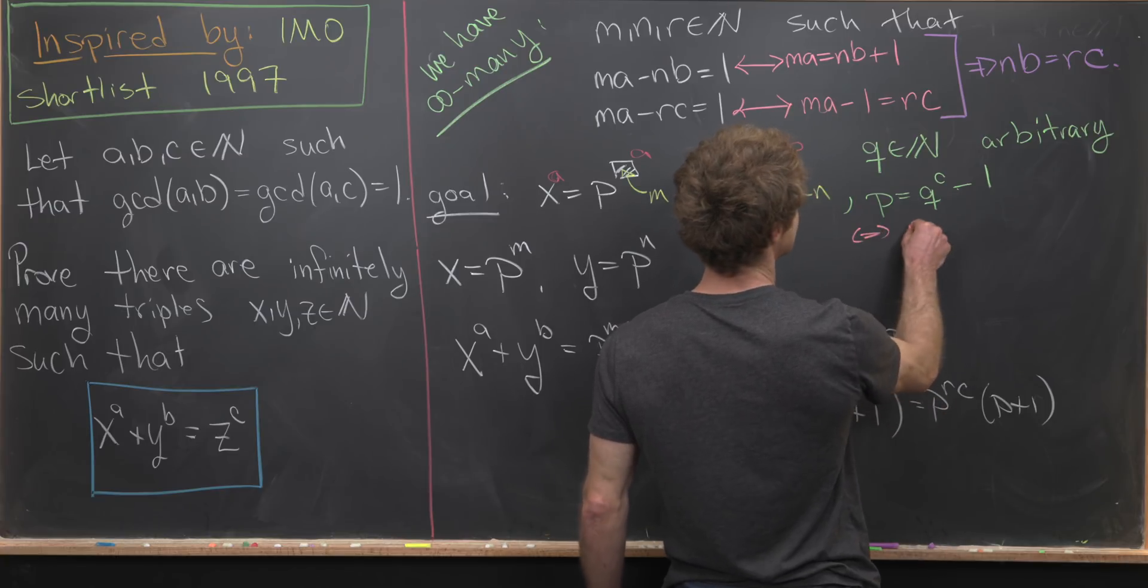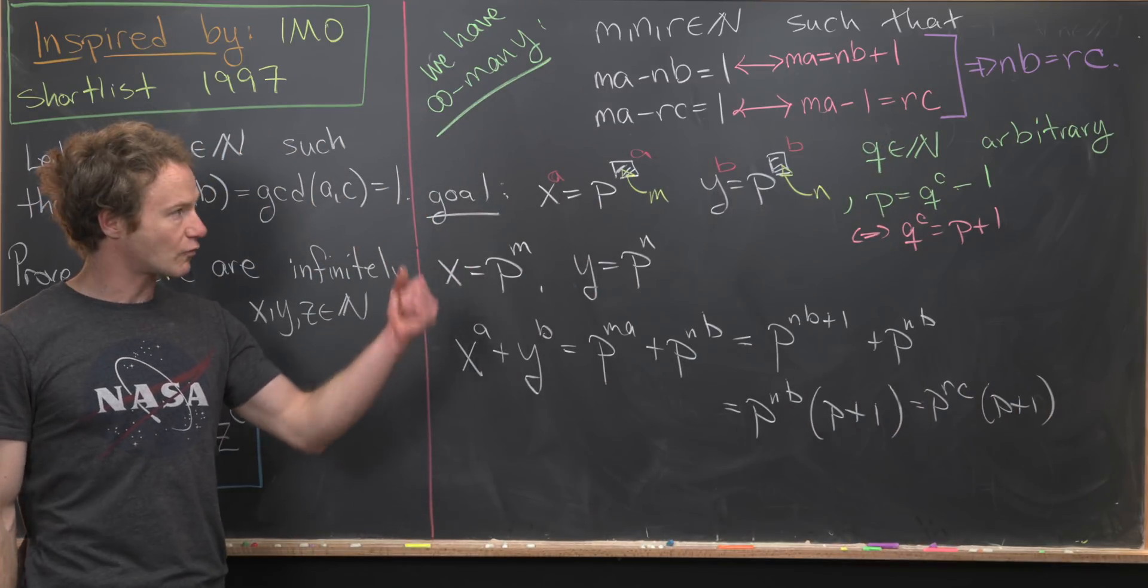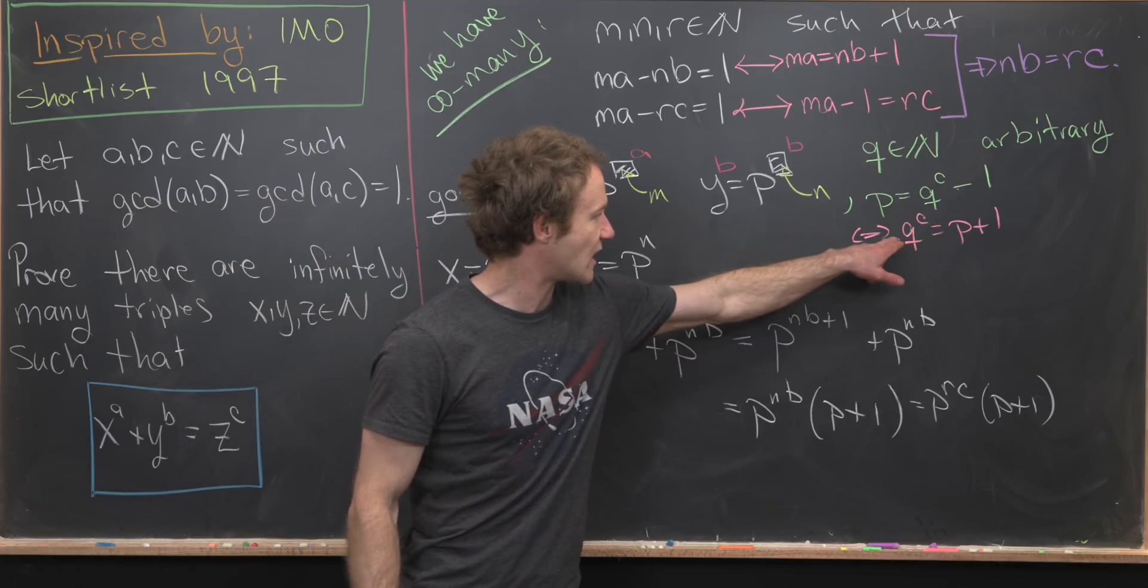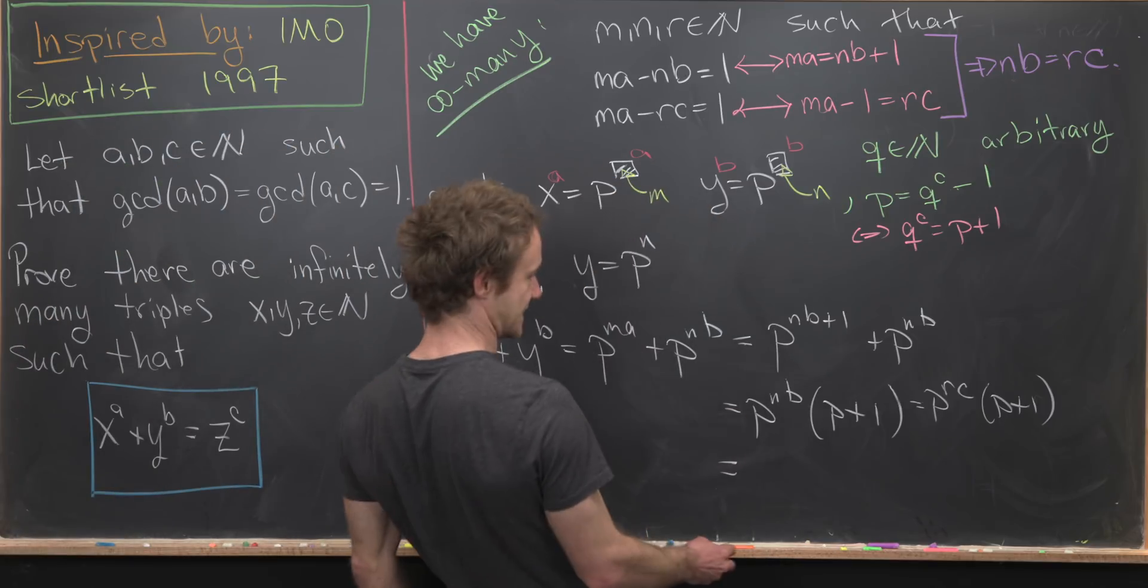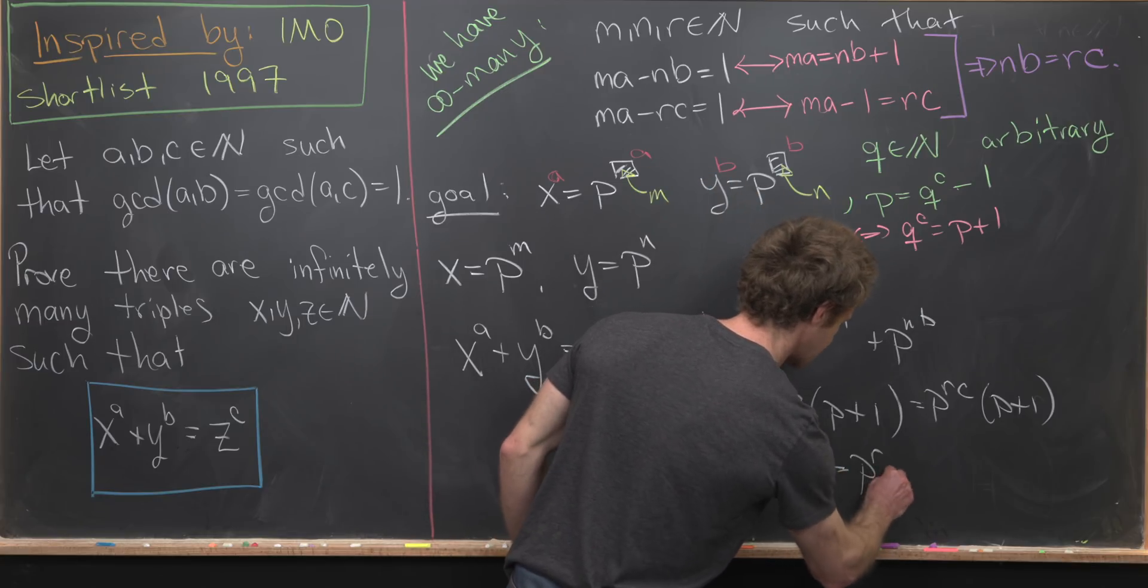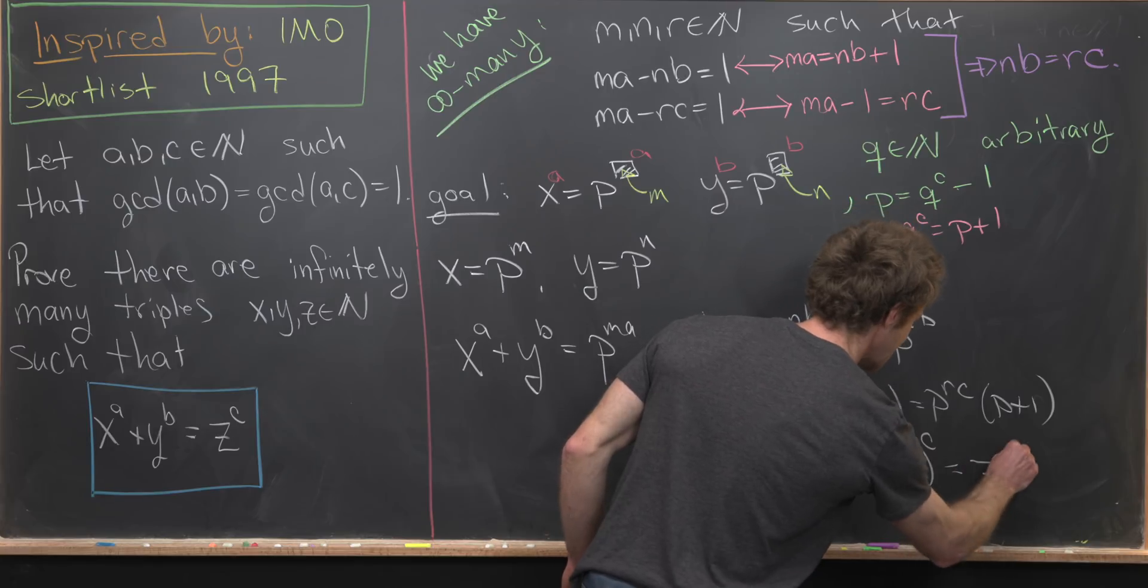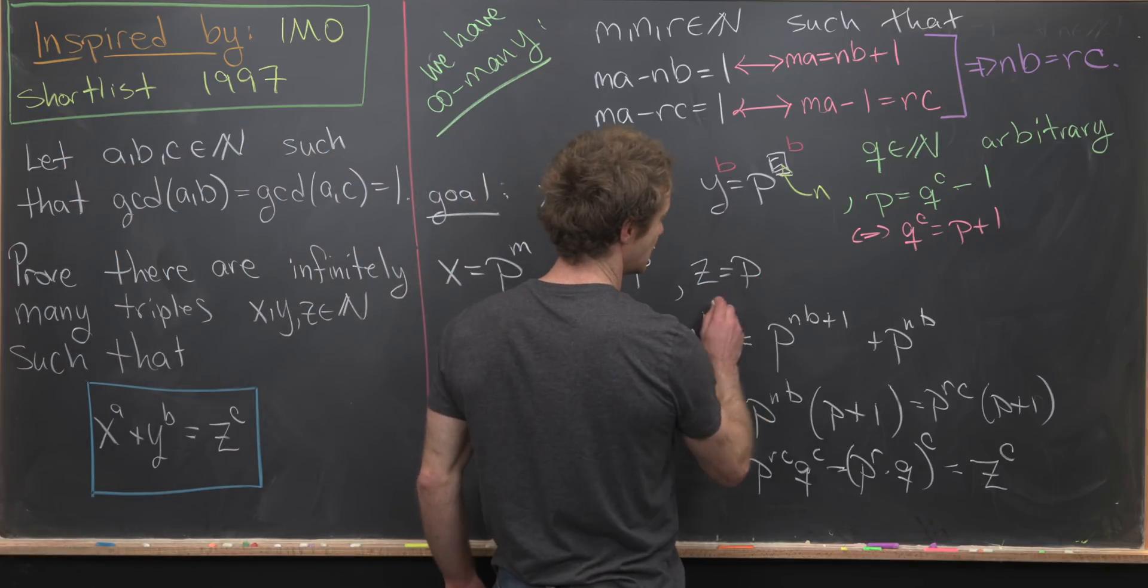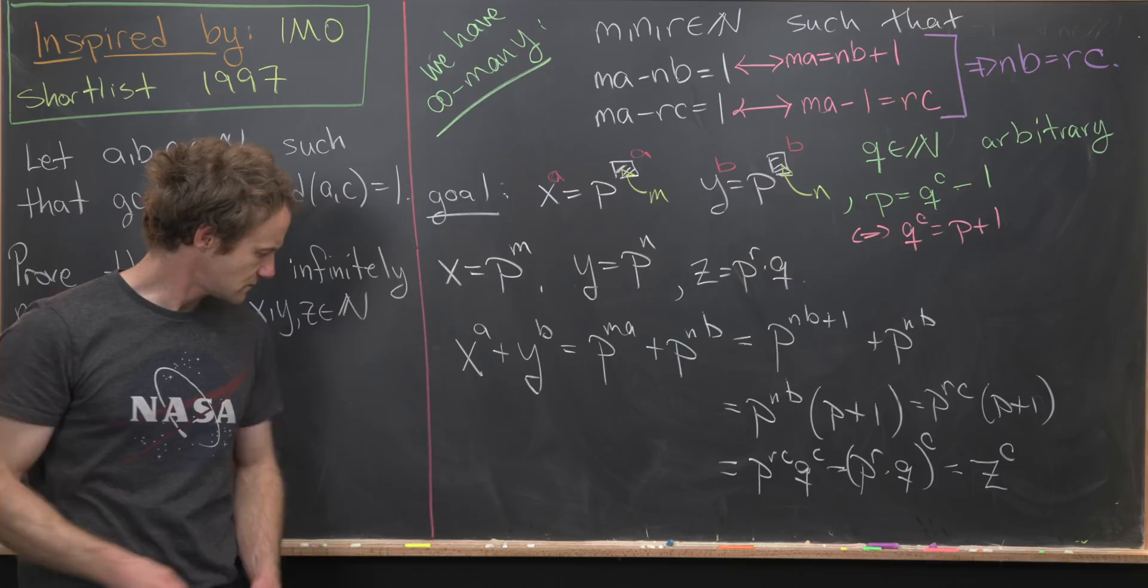So let's say maybe if we choose Q in N to be arbitrary, and then set P equal to Q to the C minus one. Notice that that is equivalent to saying that Q to the C is equal to P plus one. So here we took just a random value Q and we constructed our P out of it. But notice that we constructed our P out of it so that we include this power of C, which is good news for what we have down here. So let's see that we can write this as P to the RC times Q to the C, but that's equal to P to the R times Q all to the C power. But now that's equal to Z to the C power, if we go up here and define Z by P to the R times Q.